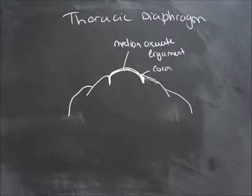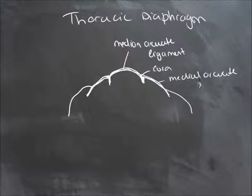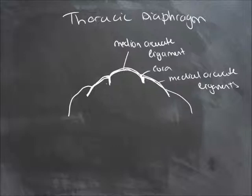Then we have the medial arcuate ligaments, and there are two of them. These are passing over a muscle called psoas major, and also another one — not well developed in most people — called psoas minor.